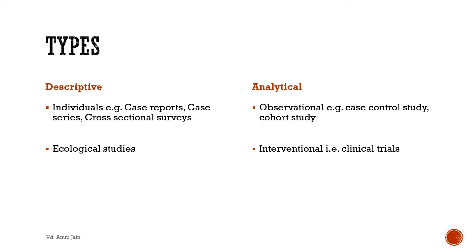Health research can be divided into descriptive and analytical types. Further, descriptive researches can be divided into two types: individual studies, which are done on individual persons, and ecological studies, which can be done on mass populations. Analytical studies can be divided into observational and interventional. Understanding these types helps us understand what different areas of research can be covered in Panchakarma.